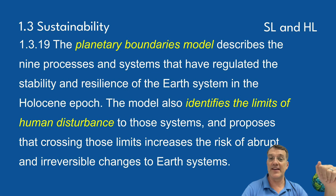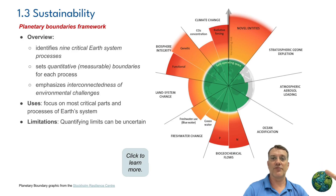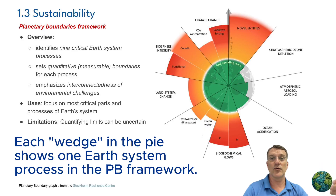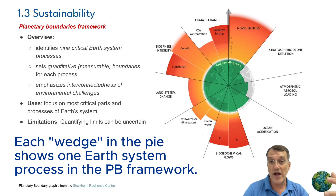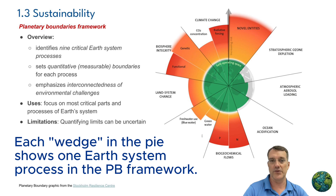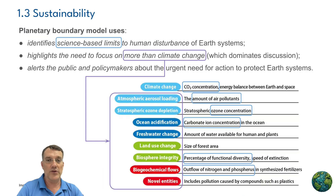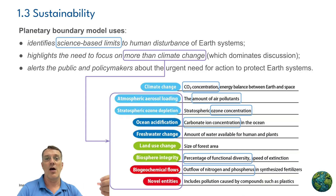Returning to the Planetary Boundaries Framework: it identifies nine critical Earth system processes and sets quantitative, measurable boundaries for each one. It focuses on the most critical parts and processes of Earth's natural systems.